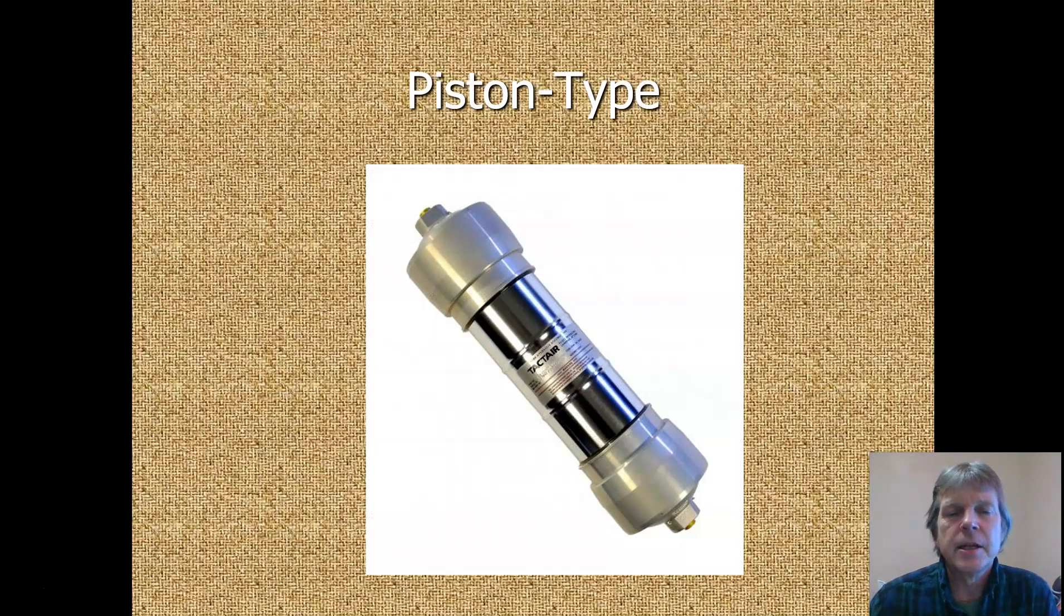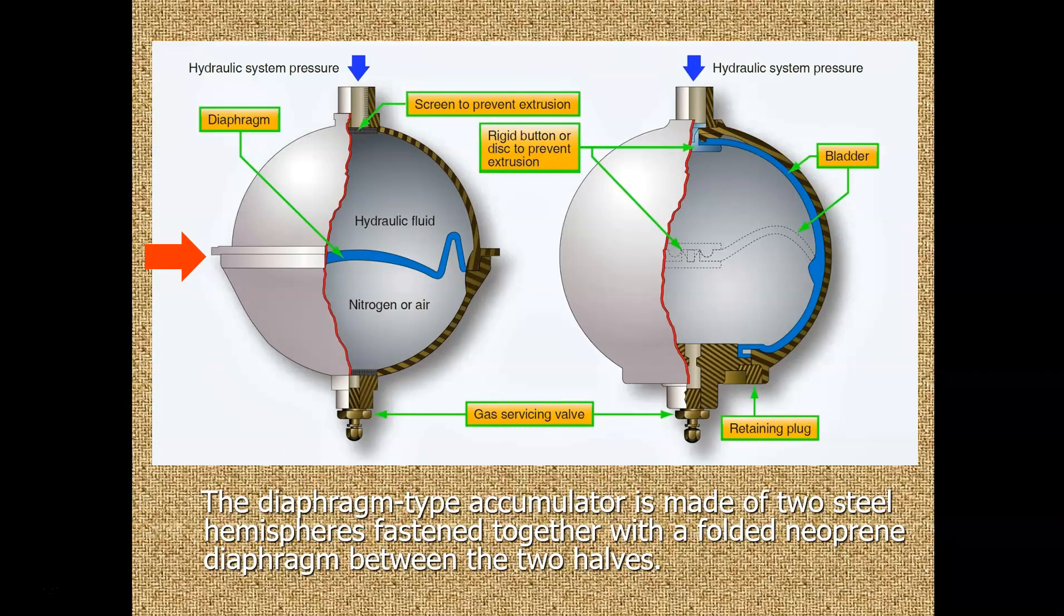This is a piston-type accumulator, and it does the same thing. It's got nitrogen on one end, and it's got a piston in it, and hydraulic fluid comes in and is stored under pressure.